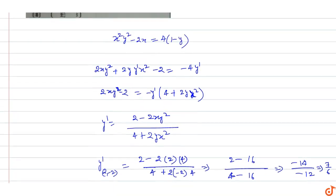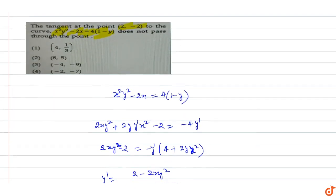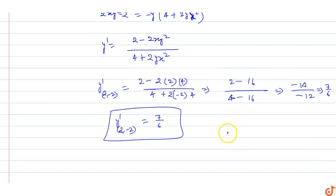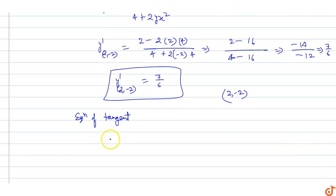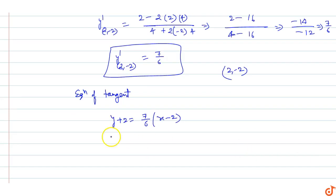The equation of the tangent at point (2, -2) with slope 7/6 is: y + 2 = (7/6)(x - 2).